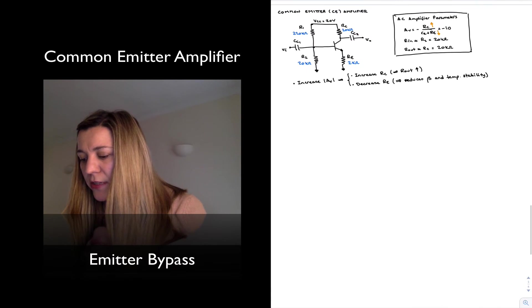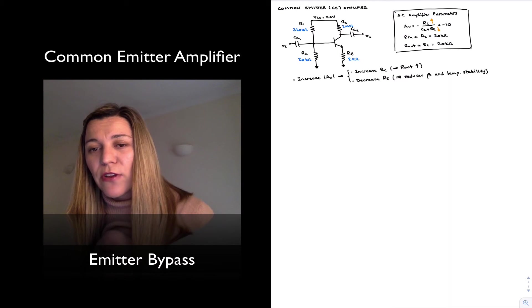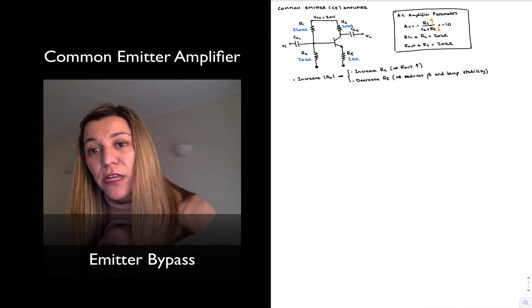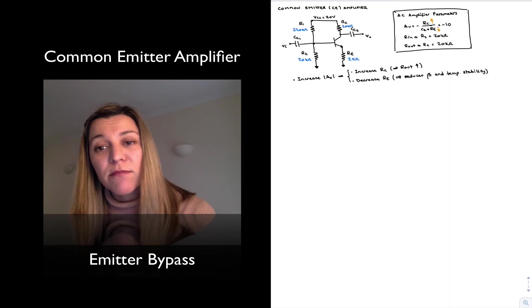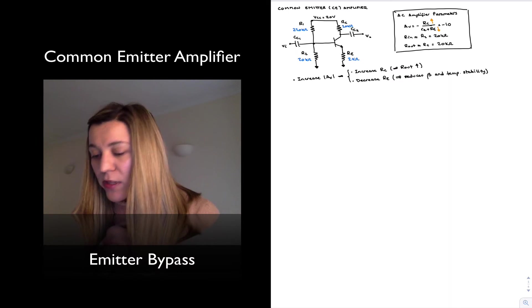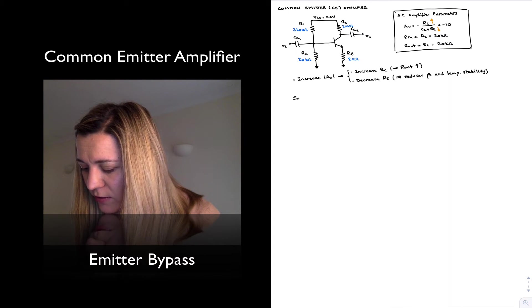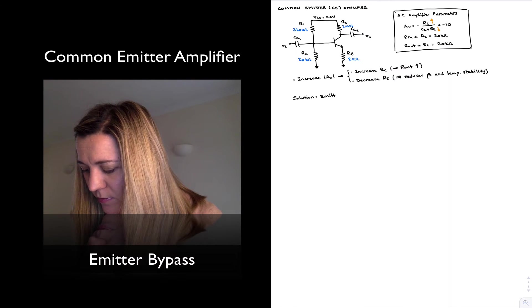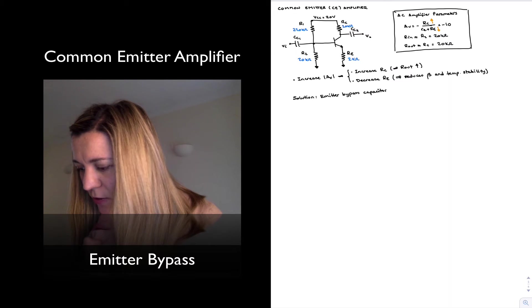Now, there is a third alternative. There is a slight trick that's going to allow us to reduce the value of RE, or actually reduce the effective value of RE, only for AC signals, while keeping the DC value of RE, or the Q point, stable. How do we do that? Well, that's by introducing an emitter bypass capacitor. So that's our little trick here. And let's see how that is done.